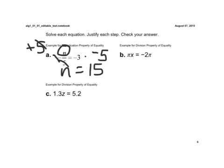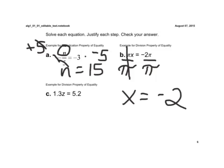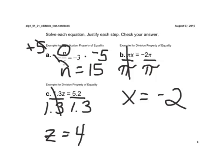If you look at example B for the division property, we want to solve for x. Well, x is being multiplied by pi. So now we're going to divide both sides by pi. And we do that. Those divide out. We get x is equal to negative 2. Just another example using a number instead of the symbol pi. z is being multiplied by 1.3. So to undo that, we're going to divide both sides by 1.3. We divide those out, and we get z is equal to, and 5.2 divided by 1.3 is the same thing as 52 divided by 13, which is z is equal to 4.